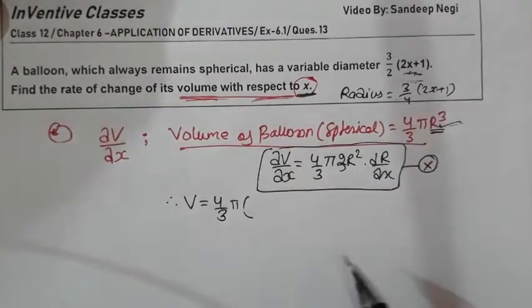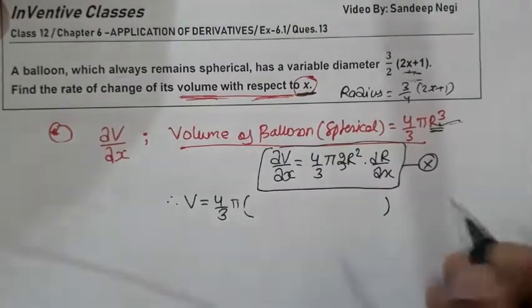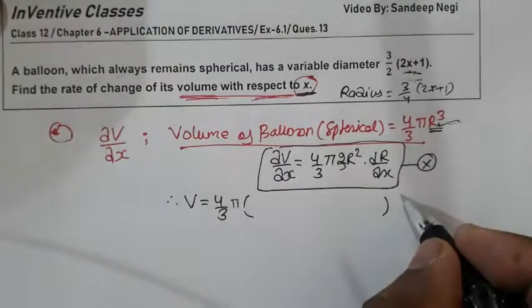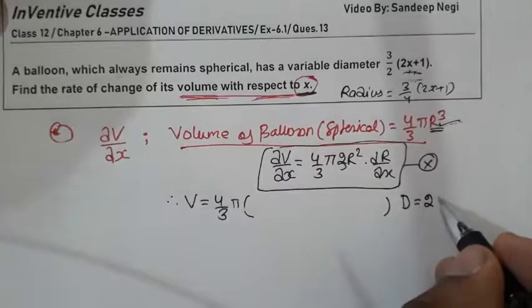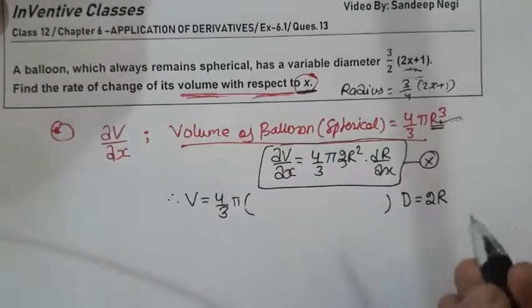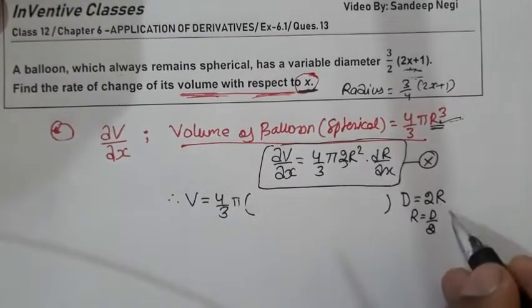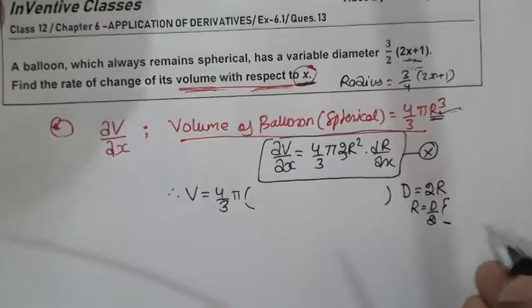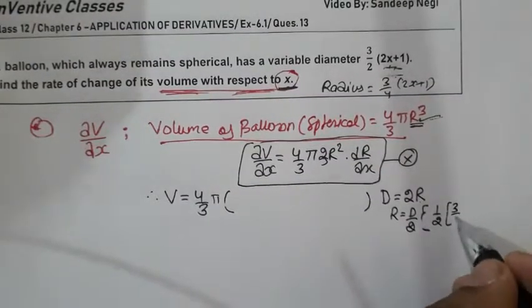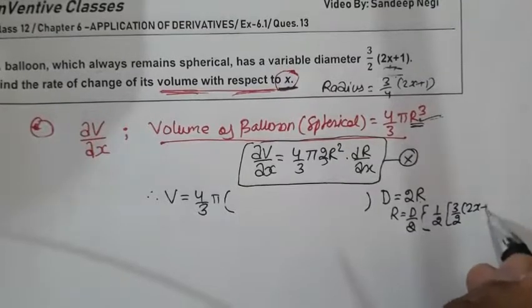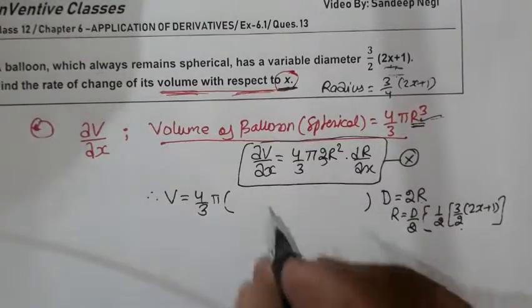Because the diameter is the half of your radius, so reason is very simple: diameter, whatever it is, twice of r. So r what will be d/2, and d value here is 3/2(2x+1). So here radius is 3/4(2x+1).